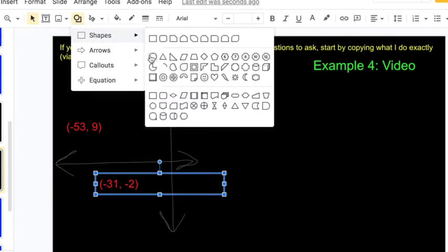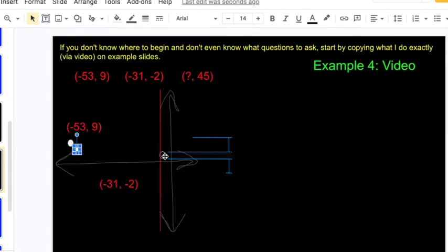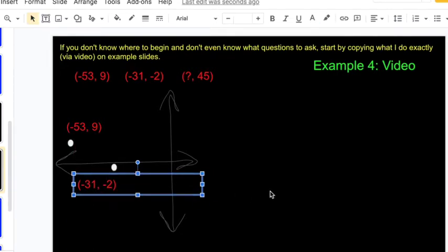Maybe something like this. Backwards a whole ton, up nine. Backwards a little bit more than half of that distance - that'd be the halfway point - a little bit more than halfway, down hardly at all. That's our two points.